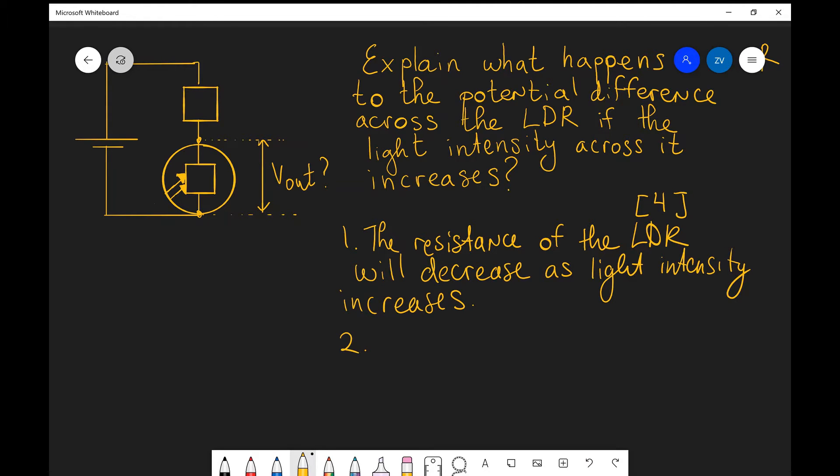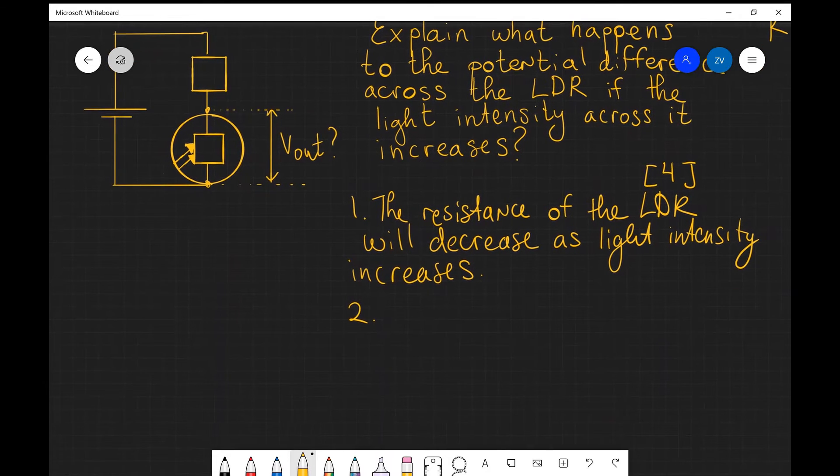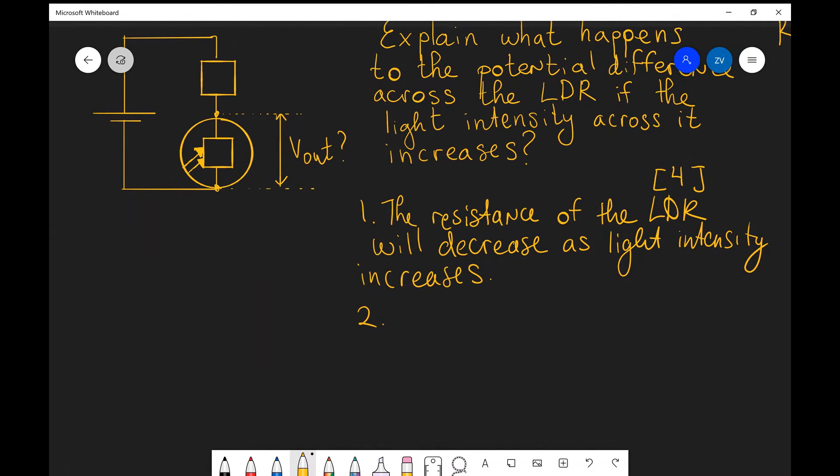Now the second thing we need to think about is the total resistance and the current. If the resistance of the LDR decreases, meanwhile the resistance of the fixed resistor remains the same, that means that the total resistance in the circuit will decrease. So the total resistance in the circuit will decrease.